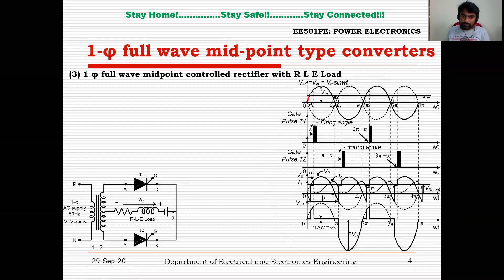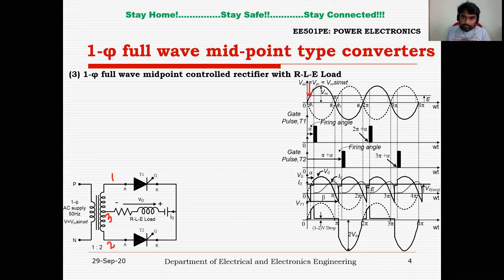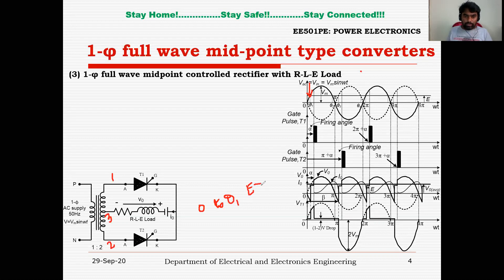The first waveform is a sinusoidal input waveform. I have projected the battery E on the input side. At the particular point theta 1, the battery voltage is equal to Vin, the input voltage. During the interval from 0 to theta 1, the battery voltage is more when compared to the AC voltage.